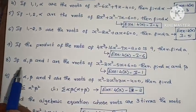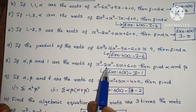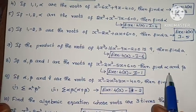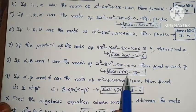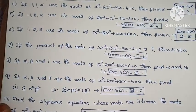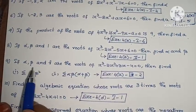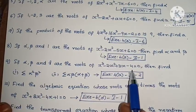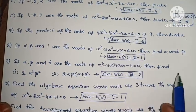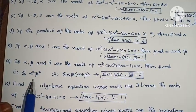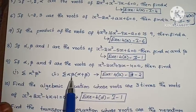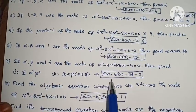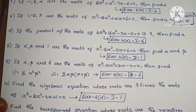Next, if alpha, beta and 1 are the roots of x³ minus 2x² minus 5x plus 6 equals 0, then find alpha and beta. Exercise 4A, second Roman numeral, first one. Next, if alpha, beta and gamma are the roots of x³ minus 2x² plus 3x minus 4 equals 0, then find: (1) sigma of alpha²·beta², and (2) sigma of alpha·beta·(alpha plus beta). Exercise 4A, second Roman numeral, second one.